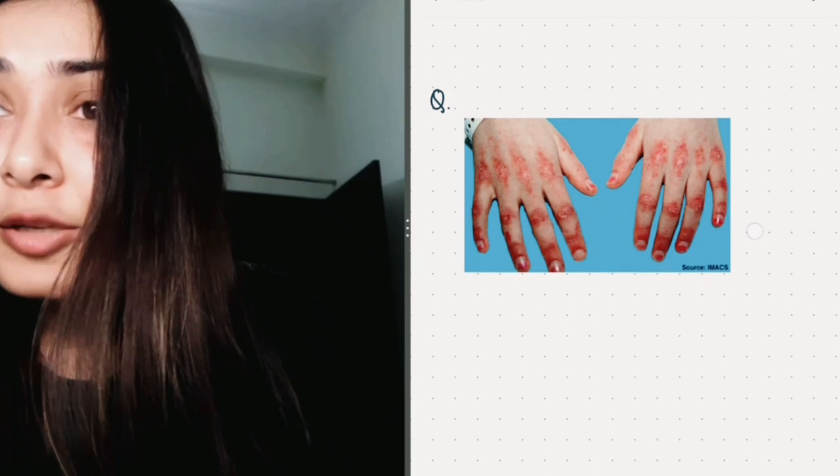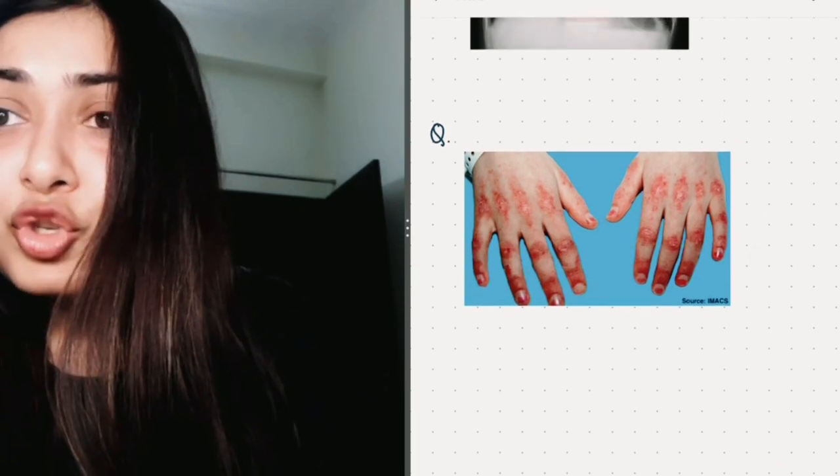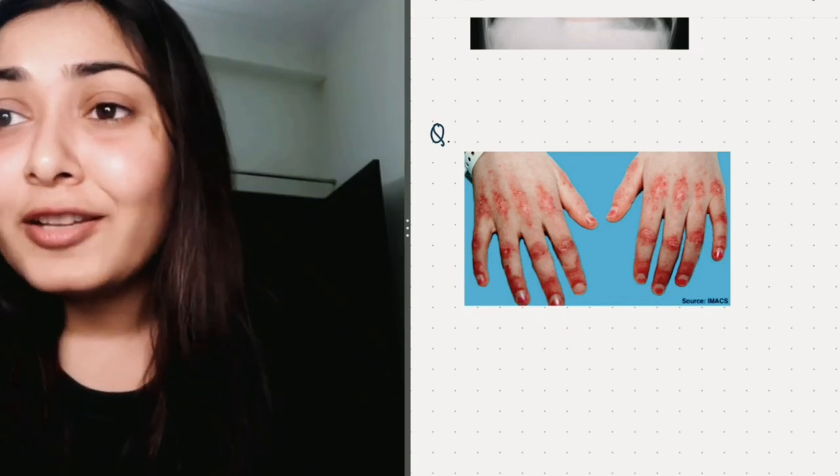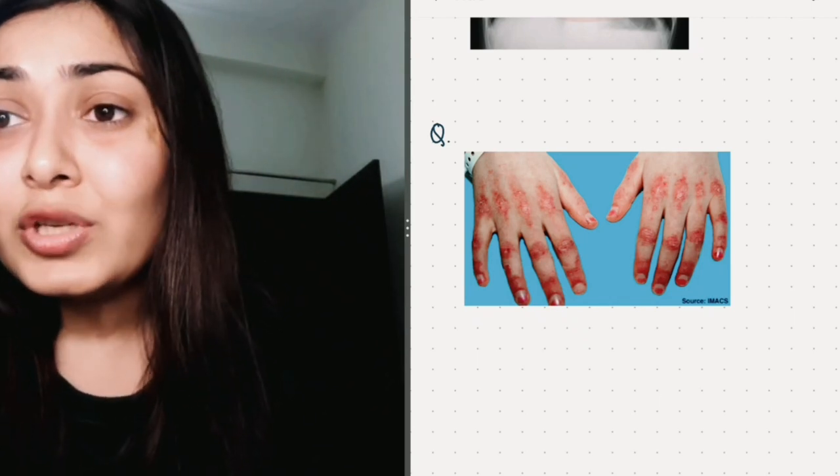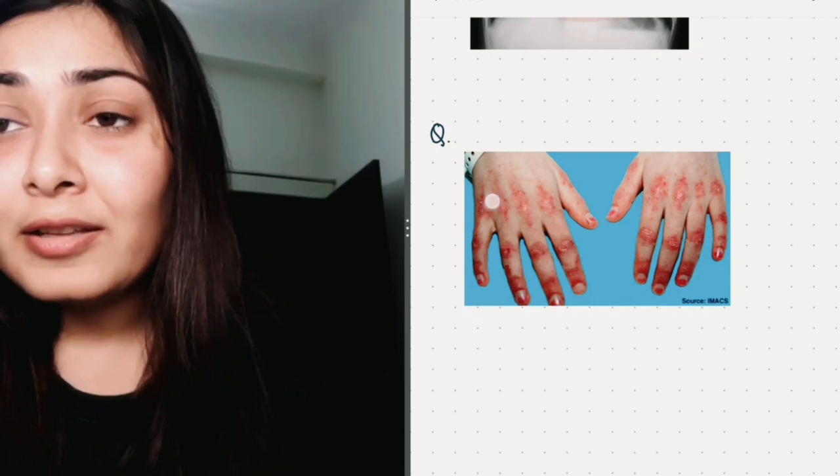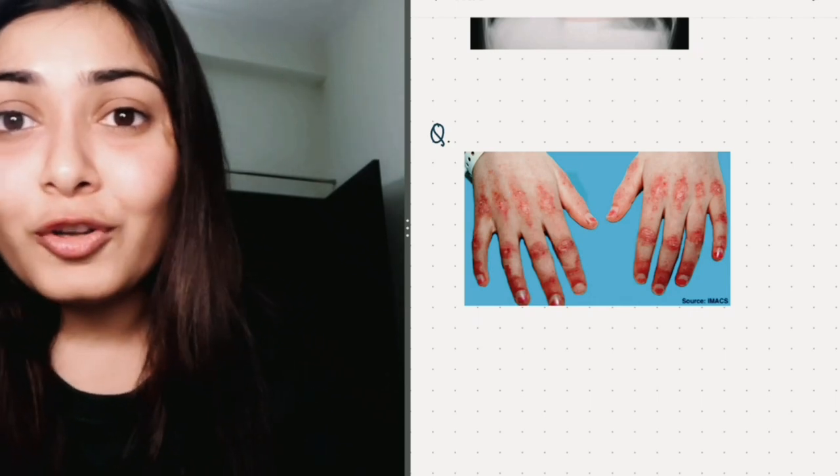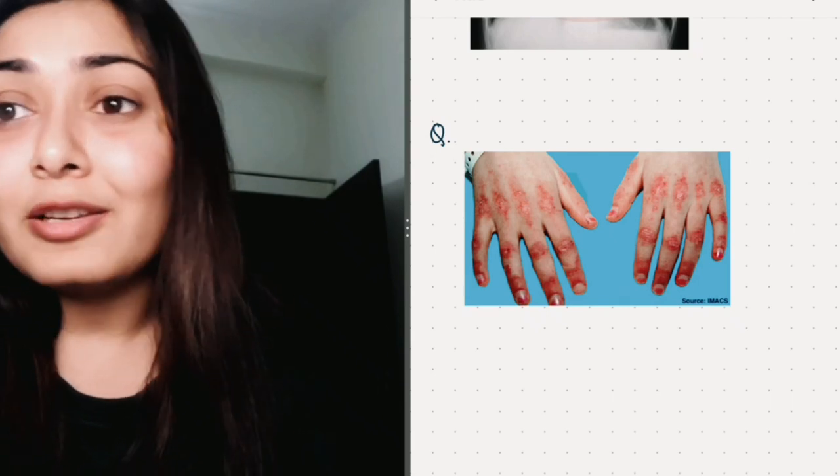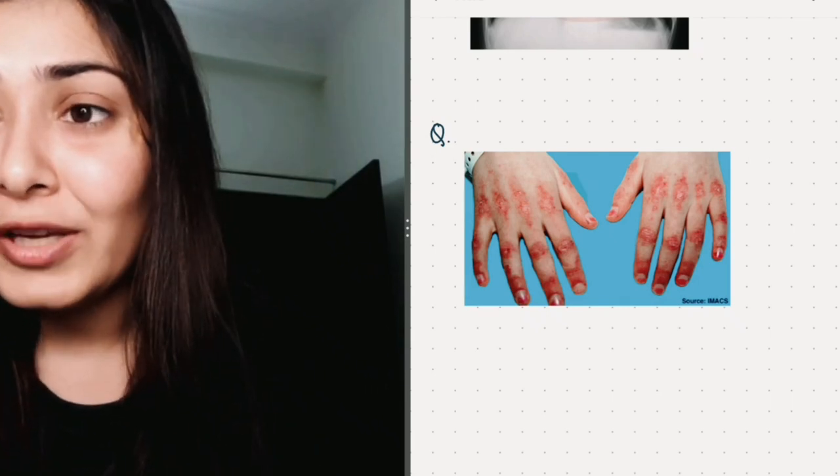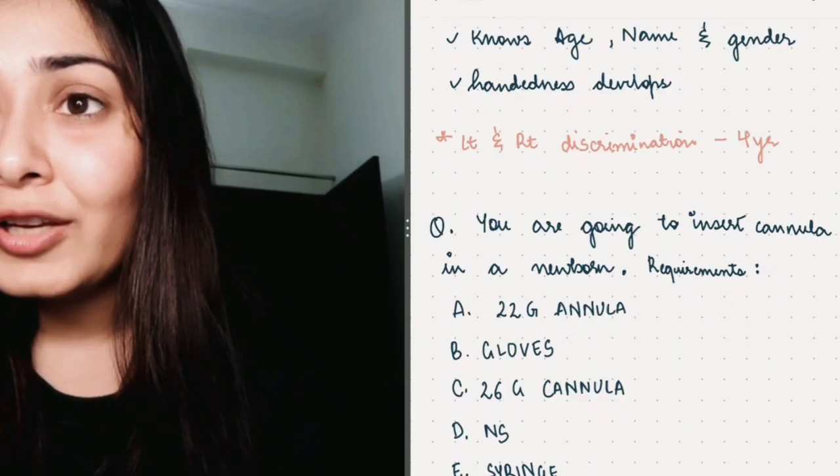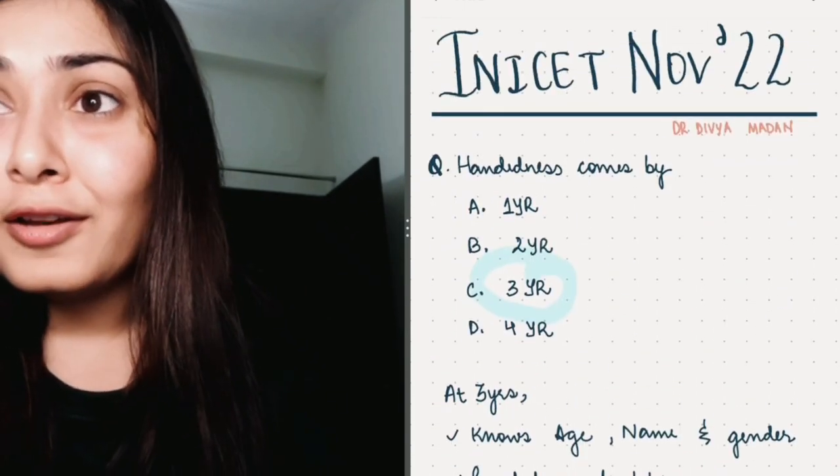Another clinical based question where an image like this was given, you can easily make out here that it is again a repeated question. You can see the knuckles, right? It is Gottron's sign, Gottron's papules, seen in juvenile dermatomyositis, right?